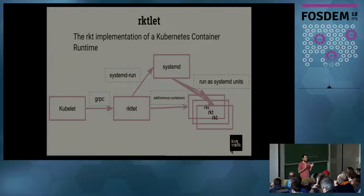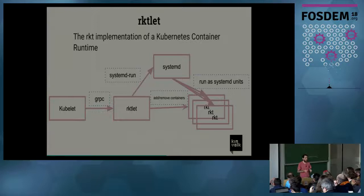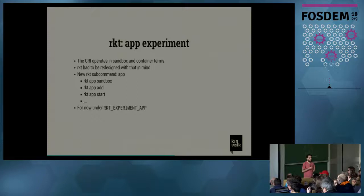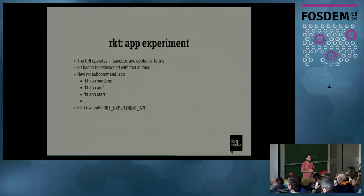Rocket has a concept of immutable pods — your pod is defined from the beginning and you just run it. But the CRI defines something different, influenced by the way Docker works, where there's no pod concept and containers are linked together. So we had to implement mutable pods in Rocket. To do that we created what we call the 'app experiment,' adding new subcommands for Rocket like create-sandbox, and commands to add, remove, start, and stop containers. Since we run systemd inside the container, this mapped pretty well to systemd concepts: create a unit file, remove a unit file, start or stop a unit file.